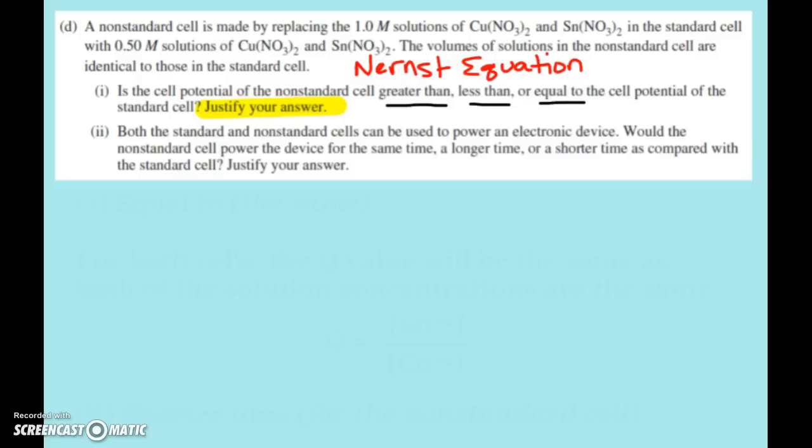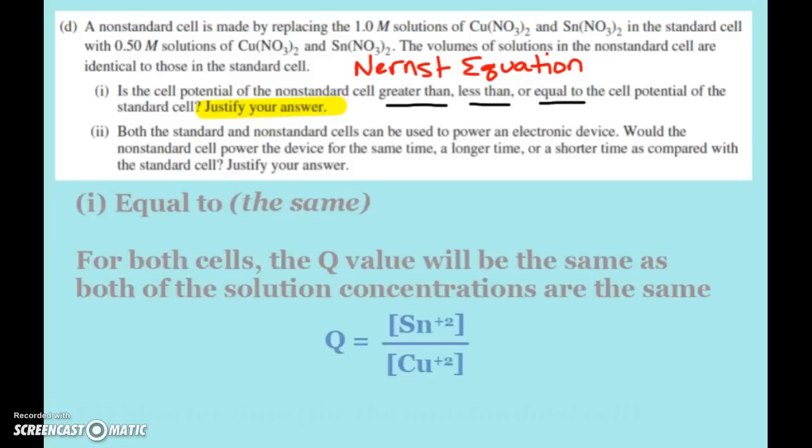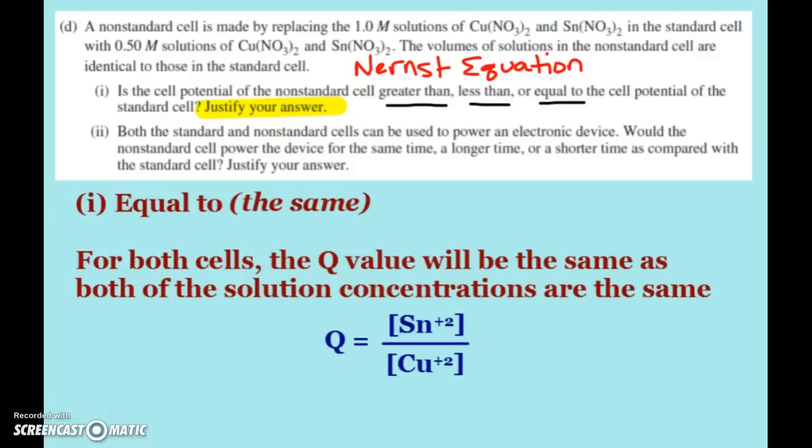Okay, so what we see is we're going from one molar solutions down to 0.5 molar. If the concentrations are the same, Q is going to be the same. Okay, so one molar over one molar, Q is one. 0.5 molar over 0.5 molar, Q is one. Our cell potential is going to change if we have different values of concentrations that give us a different Q value. So here, what we see, the cell voltage is going to be equal to, or stay the same. Because for both cells, the Q value will be the same as both of the solution concentrations are the same.